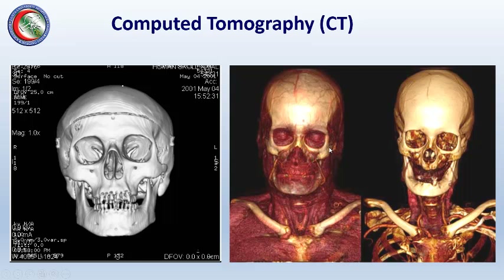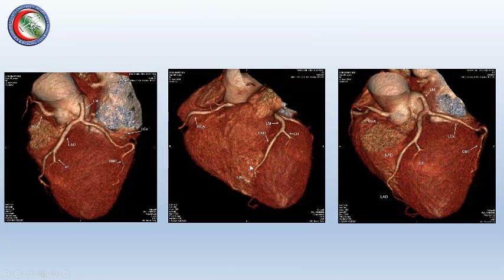This is another example using a 320-slice multidetector CT for cardiac imaging. These machines are very rapid, which is essential since we cannot stop the heart to take an image. These are 3D images of the heart where we can study the coronary vessels in detail using CT.